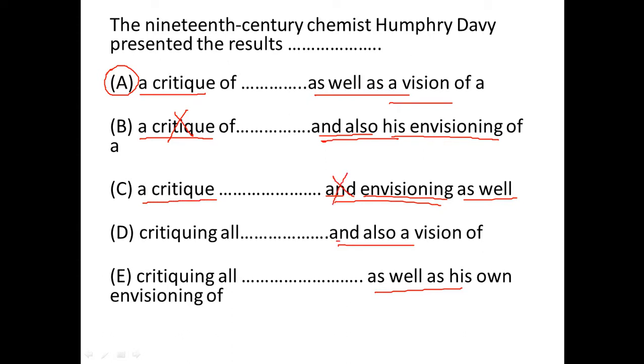Again in D, and also is redundant. A vision is not parallel to critiquing. Also, if you see before the underlined portion we have a comma, and before the comma we have a clause.